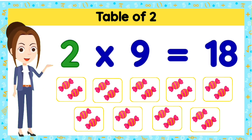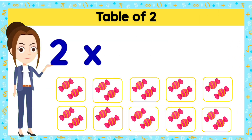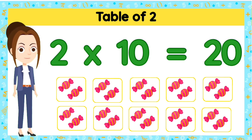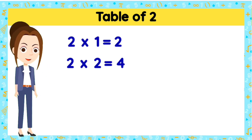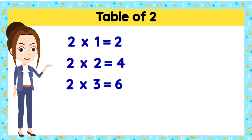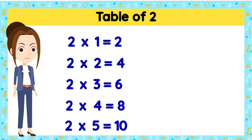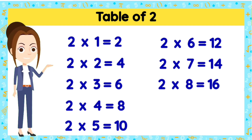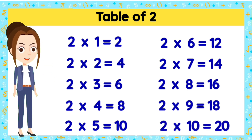Two tens are twenty. Now let's recapitulate what we learned: two ones is two, two twos are four, two threes are six, two fours are eight, two fives are ten, two sixes are twelve, two sevens are fourteen, two eights are sixteen, two nines are eighteen, and two tens are twenty.